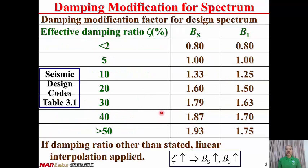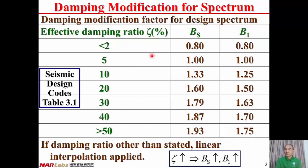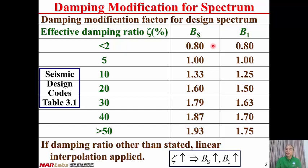The table shows the damping modification factors BS and B1. We find that the larger the damping ratio, the larger the damping modification factors BS and B1. When the damping ratio is 5%, BS equals one and B1 equals one, meaning there is no modification for the design spectrum. If the damping ratio is less than 5%, BS and B1 are less than one, and one over BS and one over B1 are larger than one. If the damping ratio is larger than 5%, BS and B1 are larger than one, and the reciprocal of BS and B1 is less than one, so the design spectrum will be reduced.